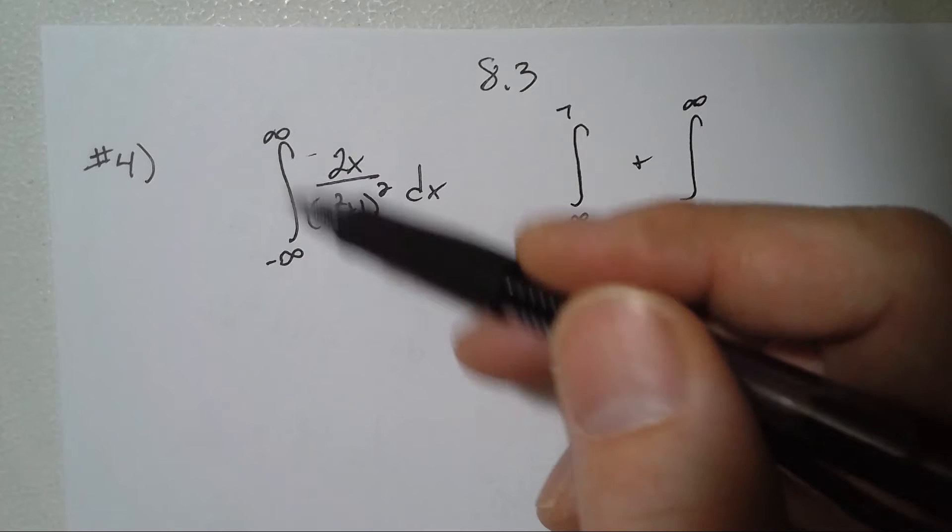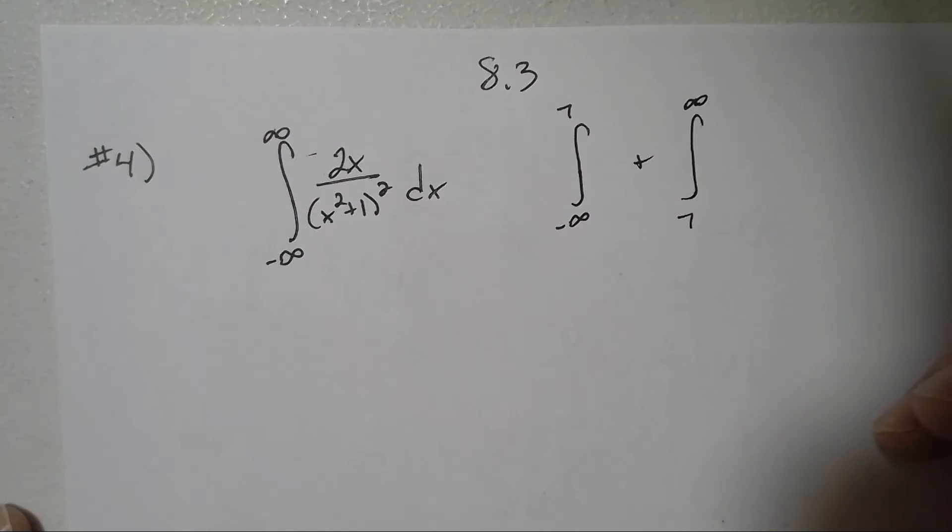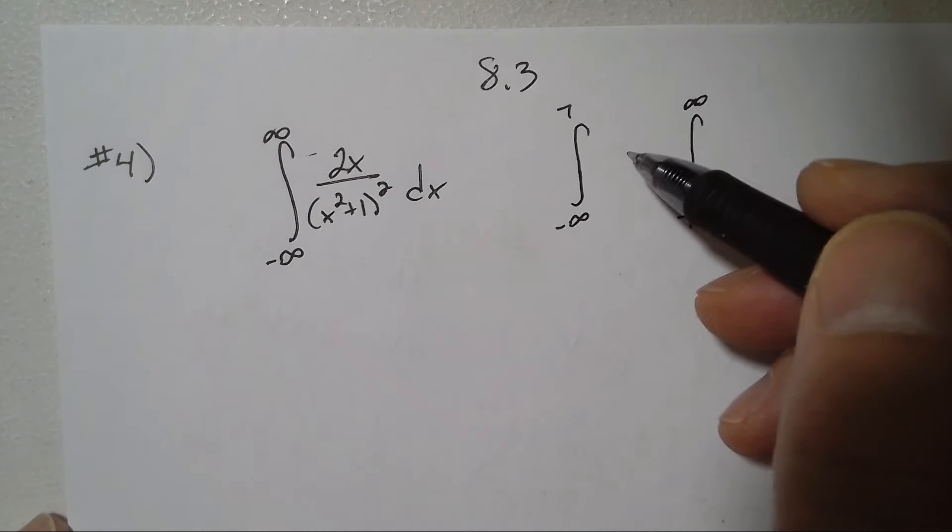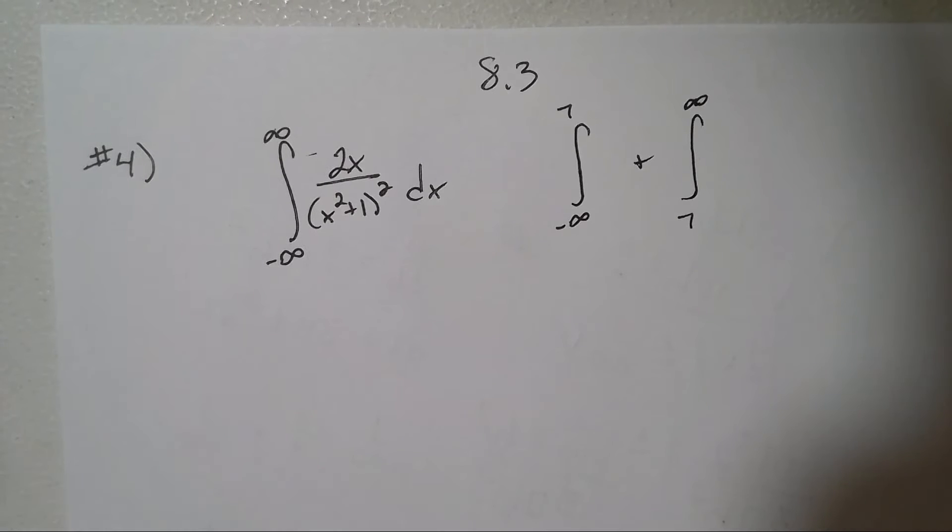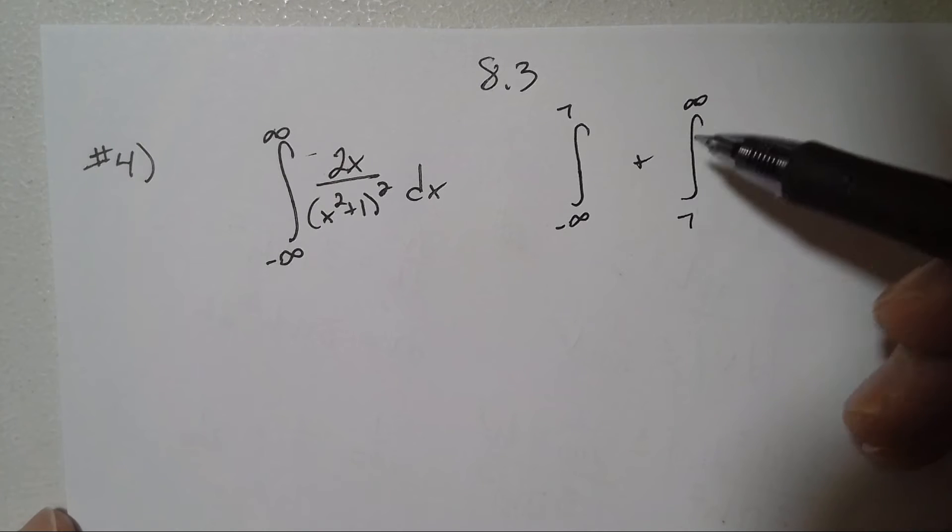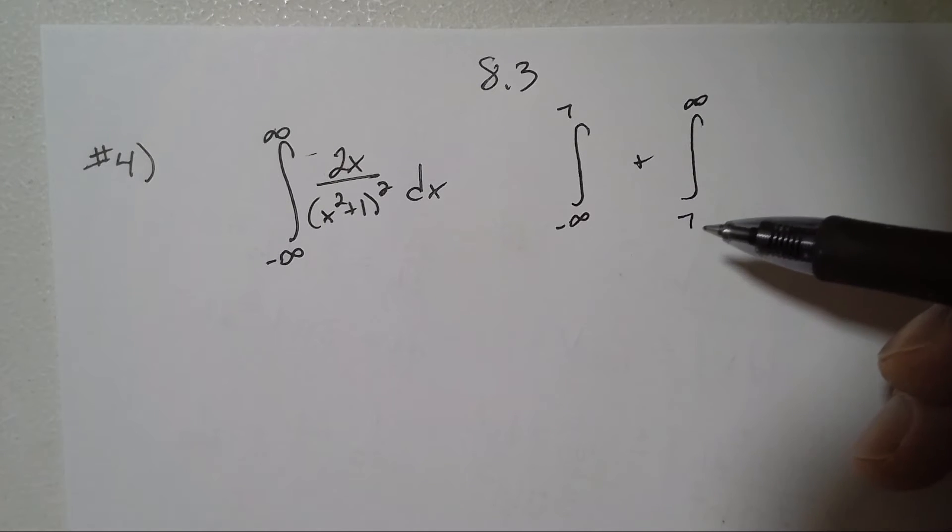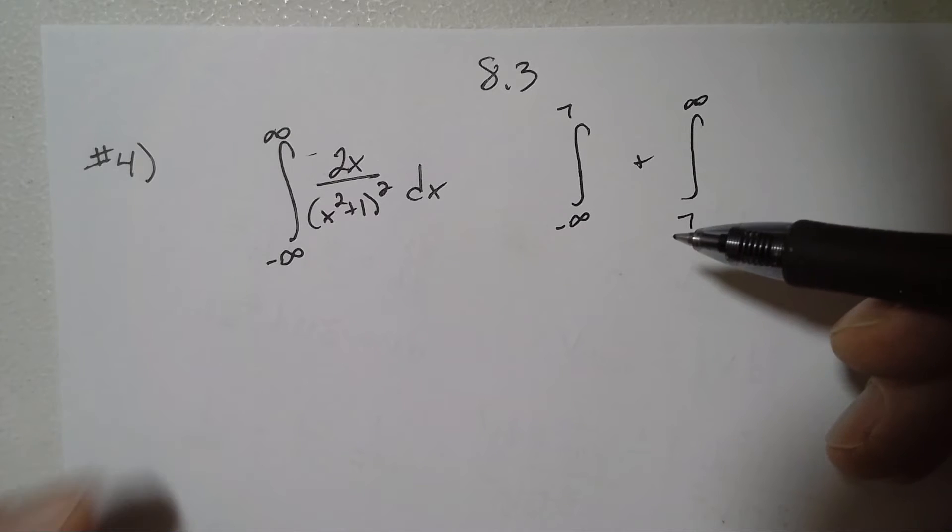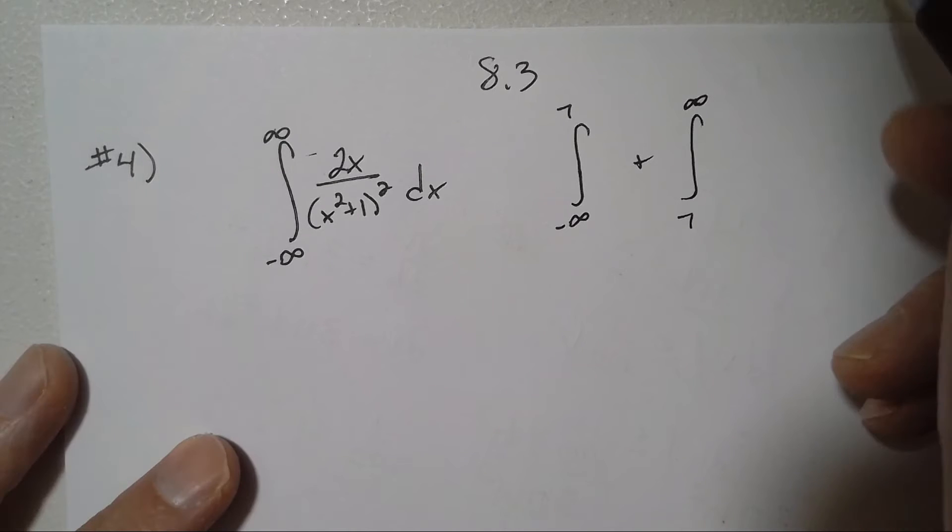Seven is not the easiest number. Typically zero or one are the easiest, just because you're going to end up evaluating it, might as well make it an easier number. But you could certainly use seven if you wanted to. So I'm going to use zero.